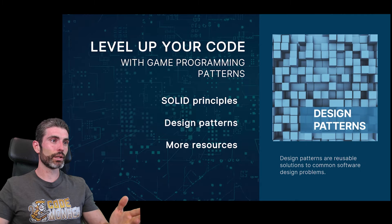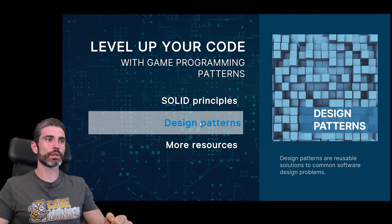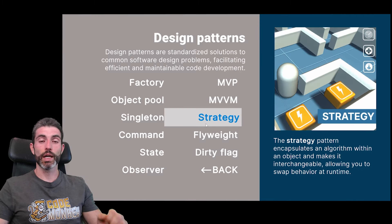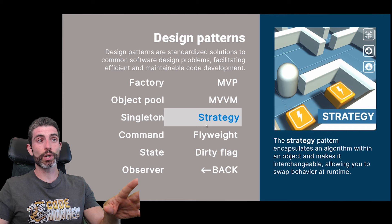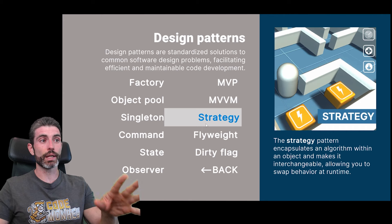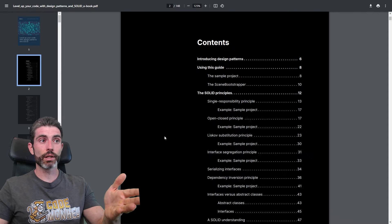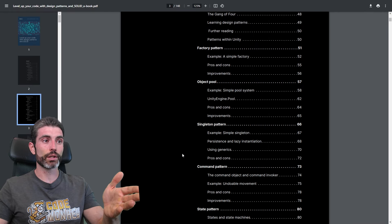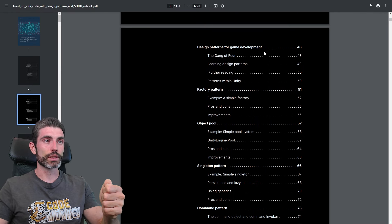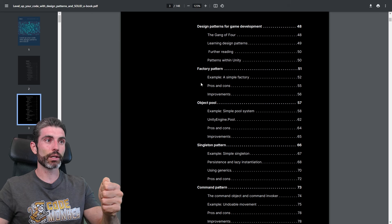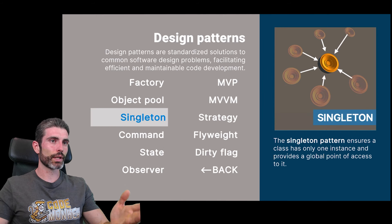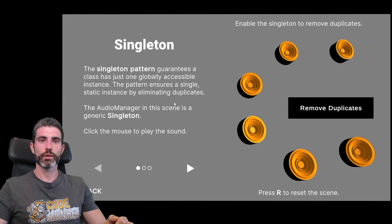Back in the main menu, we see a section on design patterns. As you can see, this includes quite a lot of them. These interactive demos show them in action, but you can also read the theory in much more detail in the ebook — tons of pages for all design patterns: factory, object pooling, singleton, and so on. For example, let's look at the singleton pattern.